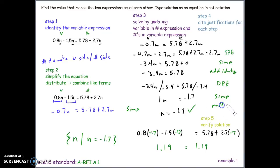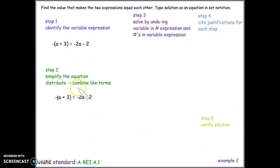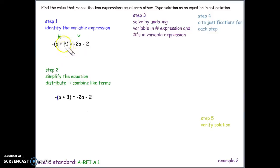For example two, step one is to identify the variable side and number side. Since there are variables in both expressions, let's make the right side the variable side and the left side the number side. It doesn't matter which side you choose, as long as you eliminate variables from the number side and numbers from the variable side. Step two is to simplify.